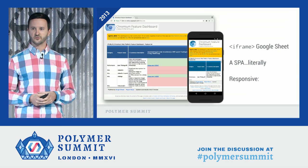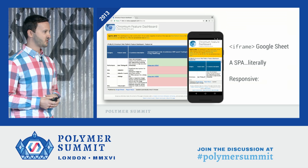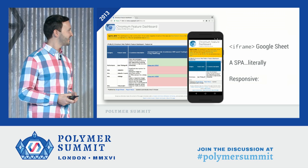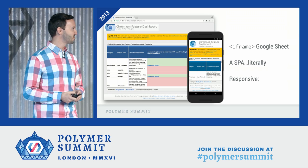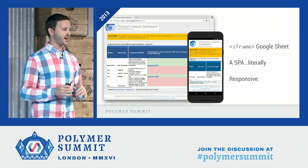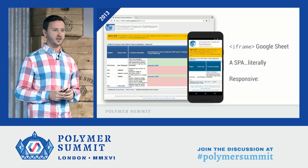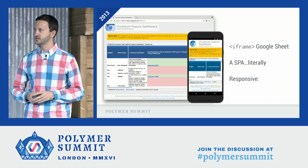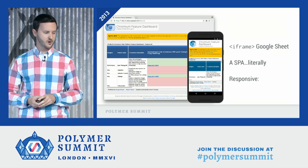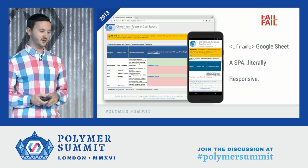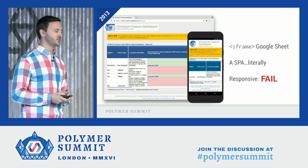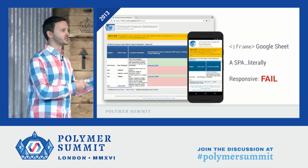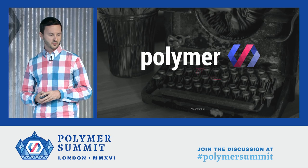In 2013, we launched an initial version of Chrome Status. It was literally a single page application in every sense of the word — it was one page, an iframe to a Google spreadsheet. Engineers would go in and update the spreadsheet, add new features, file bugs. For the first time, developers could understand what Chrome was working on, with complete transparency into what we're going to put in Chrome. It sucked as far as usability, but it was a start.